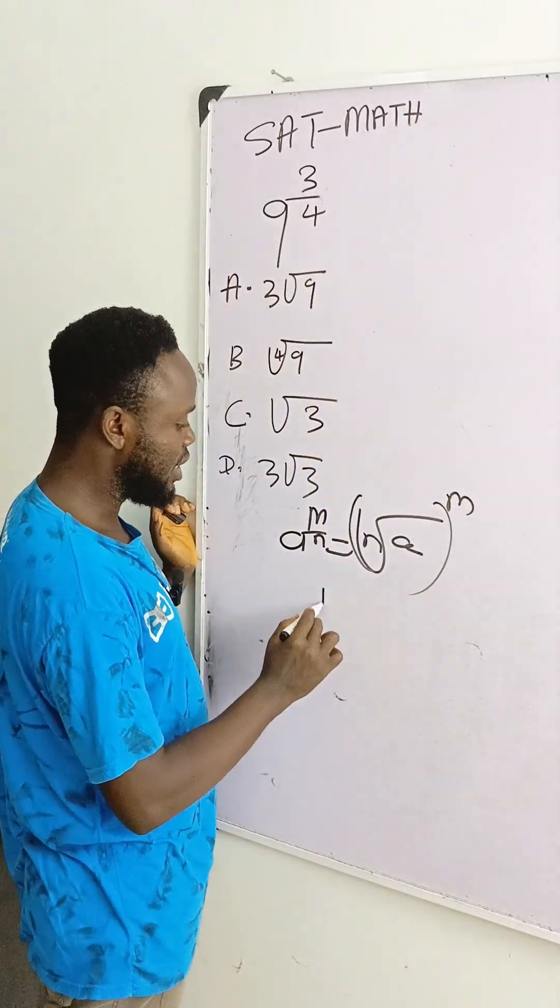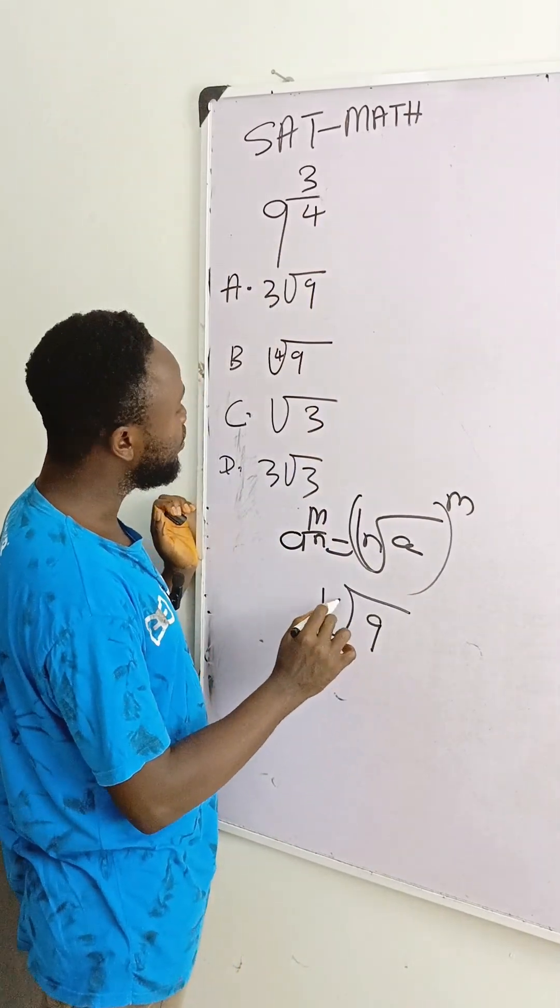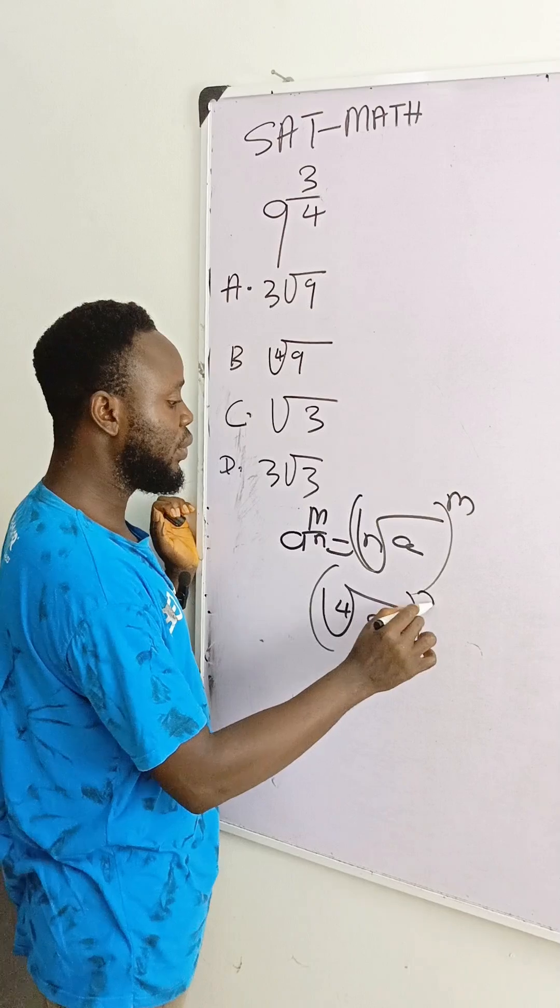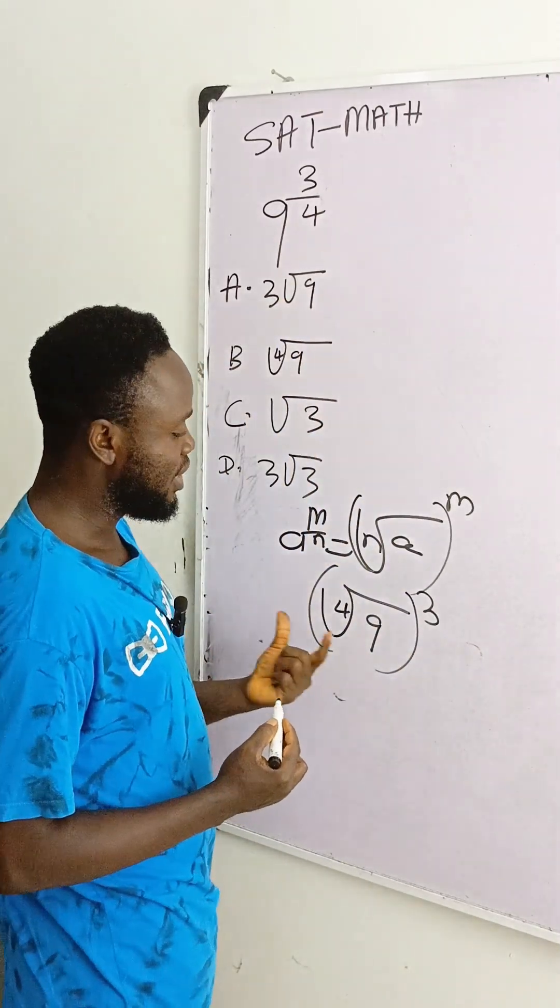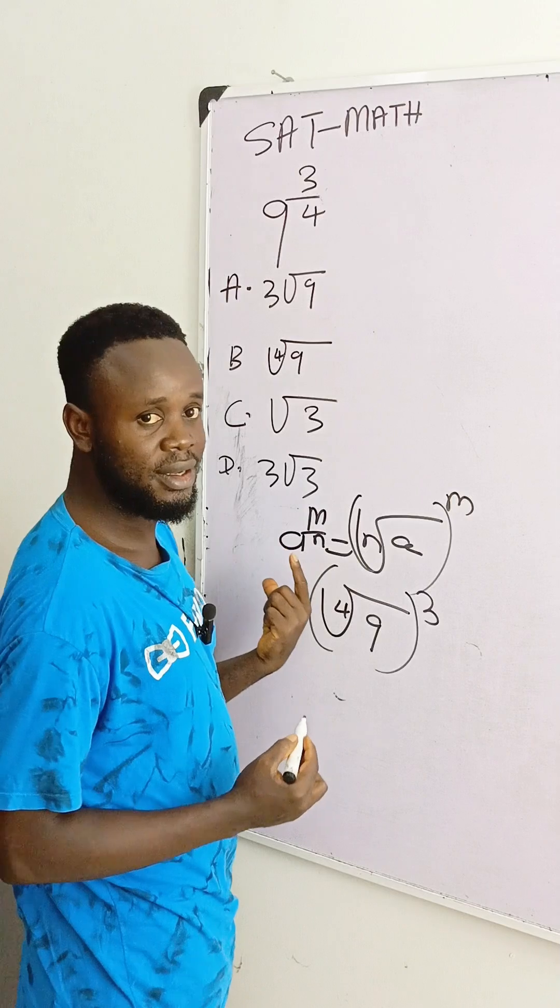If you apply this law here, you have something of this nature. Then 9 will be here, 4 will be here, and then we have 3 here. And when you know that, you can find the answer in the option. So this can give us the answer in the option.